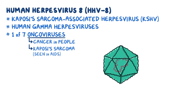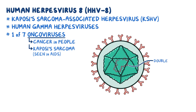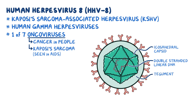Human herpesvirus 8 is a large, double-stranded linear DNA virus surrounded by an icosahedral capsid, which is a spherical protein shell made up of 20 equilateral triangular faces. The capsid is covered by a protein layer called the tegument, and finally enclosed in an envelope, which is a lipid membrane that contains viral glycoproteins and is acquired from the nuclear membrane of host cells.